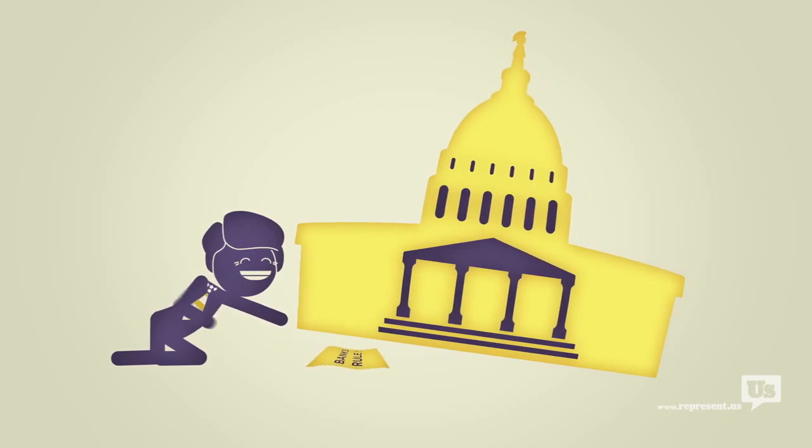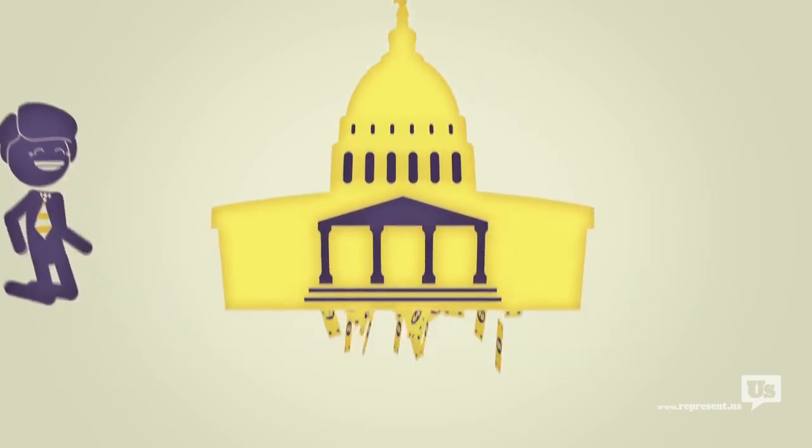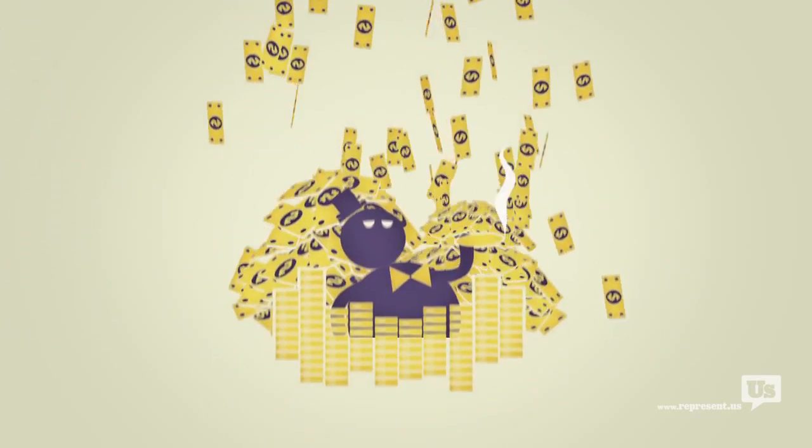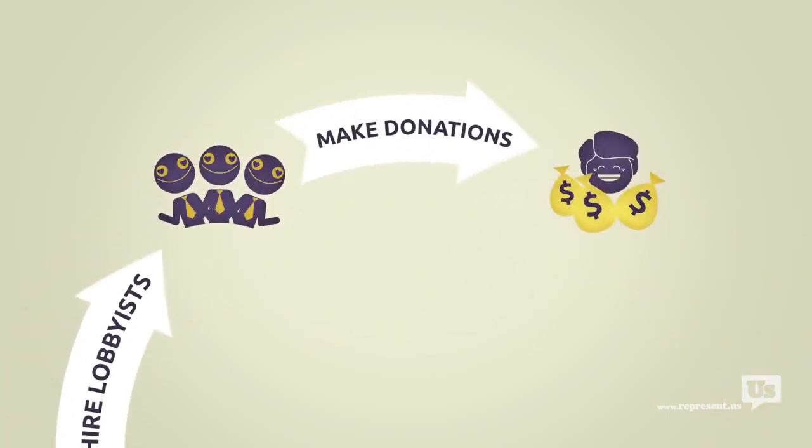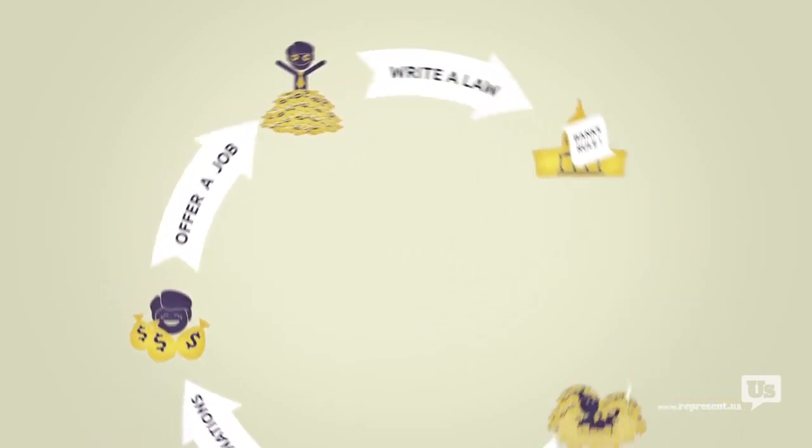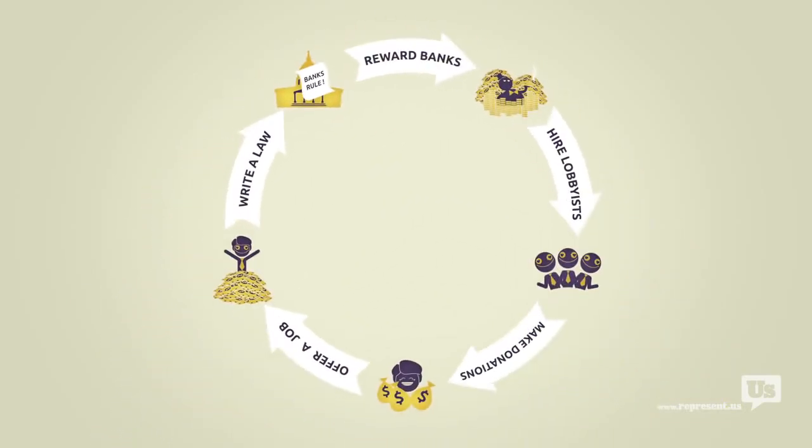So now you've got a law that greatly benefits the banks and the whole process can start over. This is how a bill becomes a law. A special interest hires some lobbyists. Those lobbyists collect campaign contributions, offer jobs, and then write the laws that Congress then passes to help those same special interests.